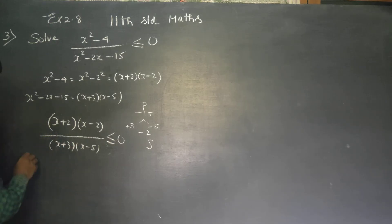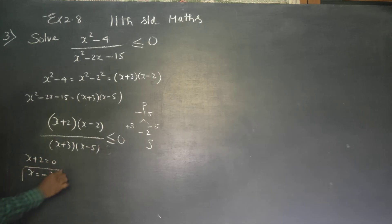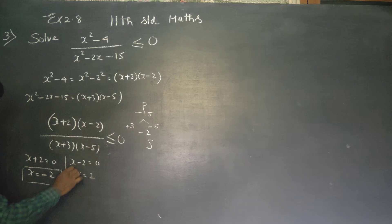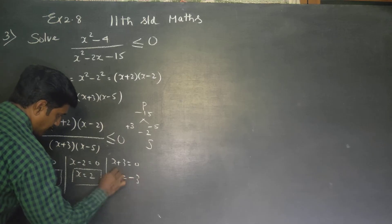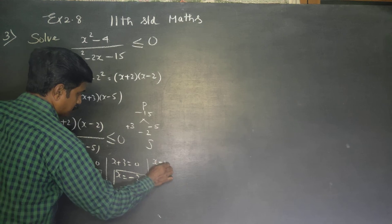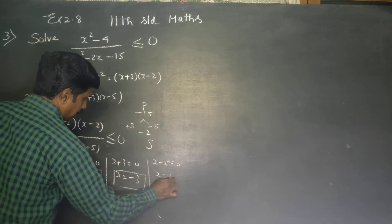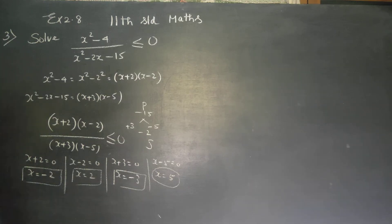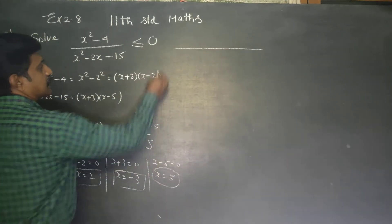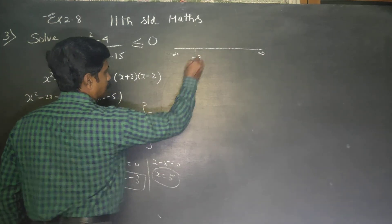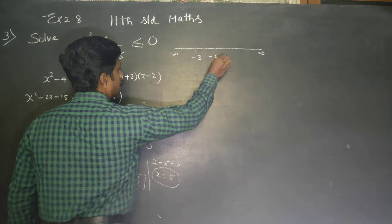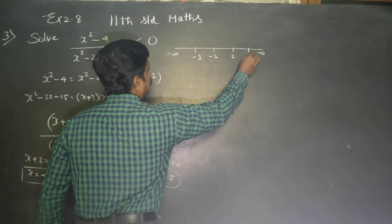Setting each factor equal to zero to find the cut points: x plus 2 equals 0 gives x equals minus 2. The interval cut points are from minus infinity to plus infinity. The critical points are minus 3, minus 2, and finally 5.